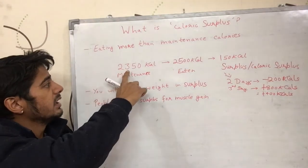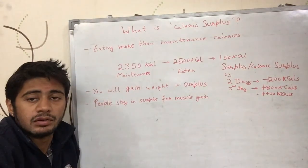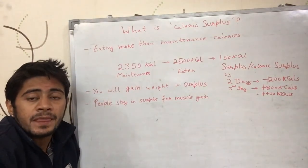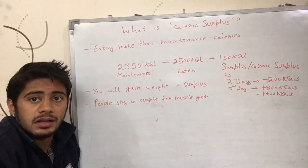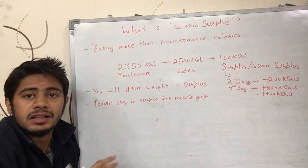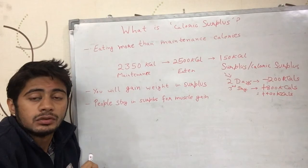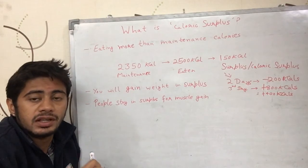For example, my maintenance calories is around 2000 calories. So if I eat 2500 calories, I am in a caloric surplus.